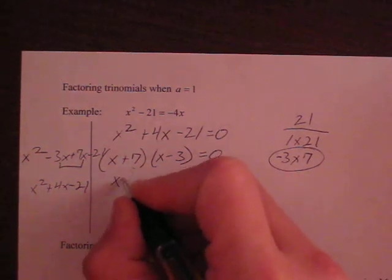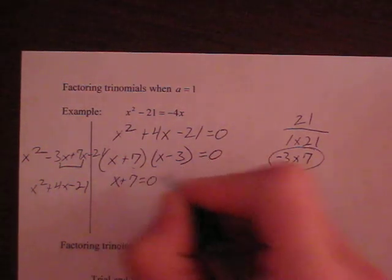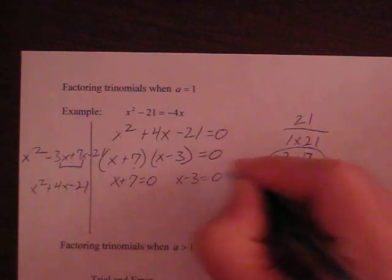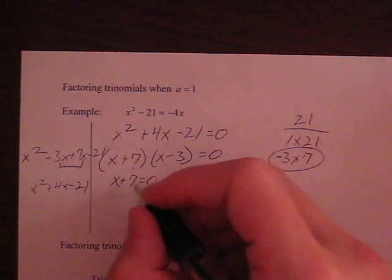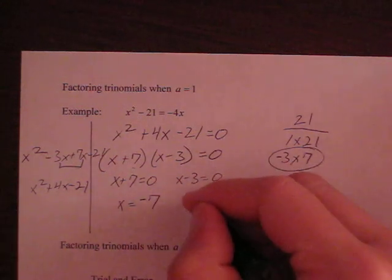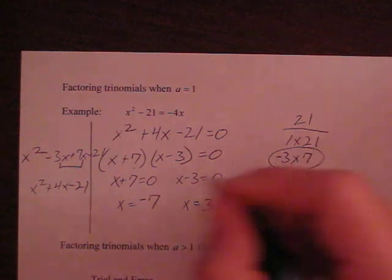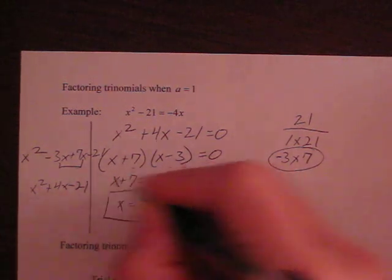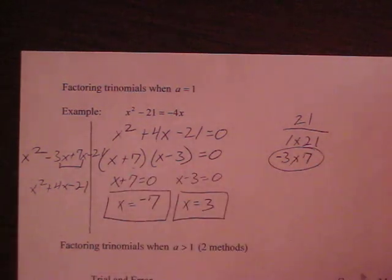And then I use the zero product property, and I say that x plus 7 equals 0, and x minus 3 equals 0. And then solving from there, I get my answer is x equals negative 7, and x equals positive 3. And so these are my answers to this trinomial.